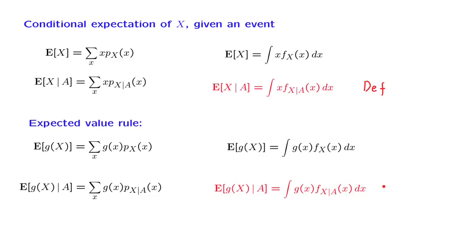This is the expected value rule in the conditional setting, and it is proved exactly the same way as for the unconditional continuous setting, except that in the proof we need to work with conditional probabilities and conditional PDFs instead of the unconditional ones.